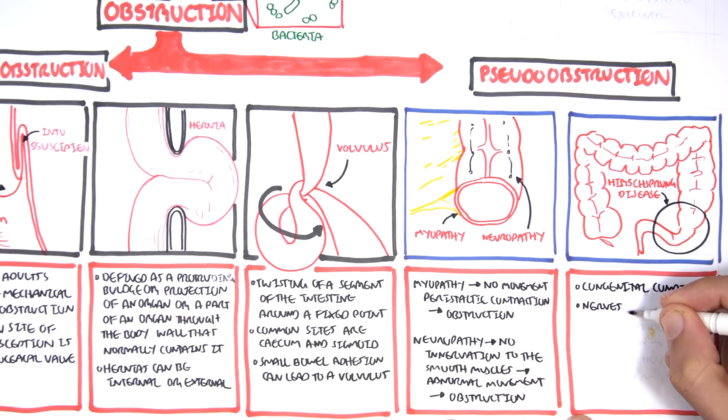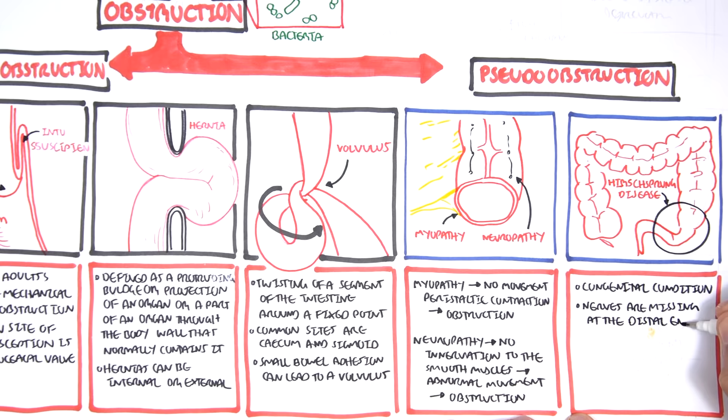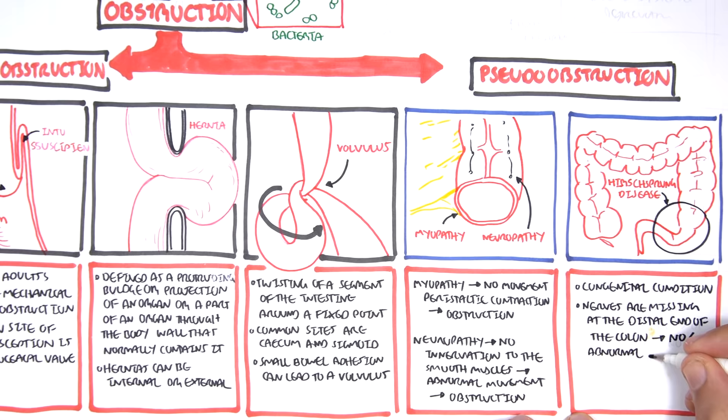Hirschsprung disease is a congenital condition — present in the baby — where nerves are missing at the distal end of the colon. This means there are no or abnormal peristaltic contractions, which can result in obstruction. Surgery can correct this.